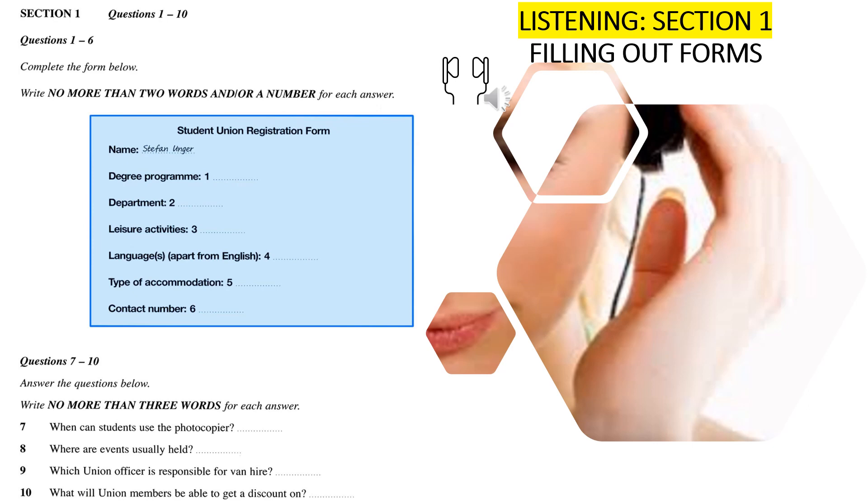I see. What's your name? I'm Anna, by the way. It's Stefan Unger. OK, well, just write that there next to name and then fill in the rest. What does it mean, degree programme? Just if you are an undergraduate or a postgraduate, or maybe you're just here for a short course? I'm a postgraduate. Do I need to say what in? Not really. It's too much detail.